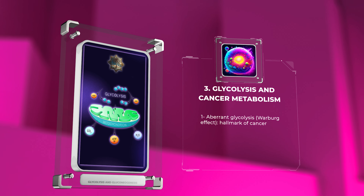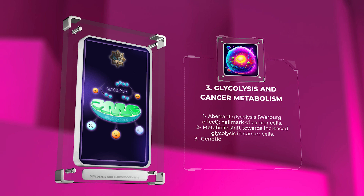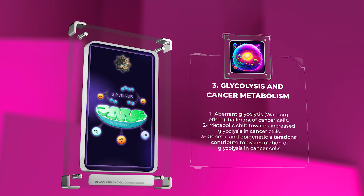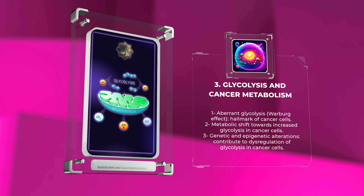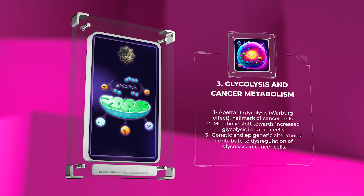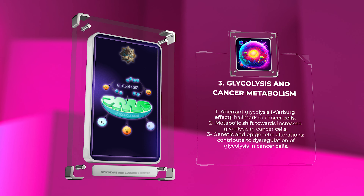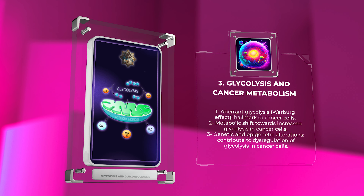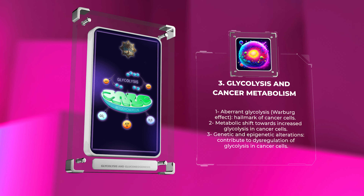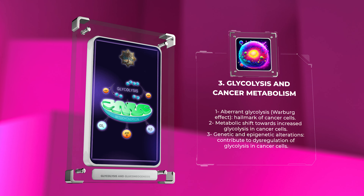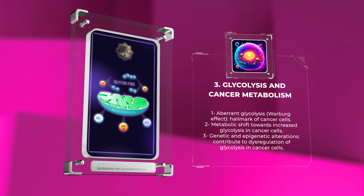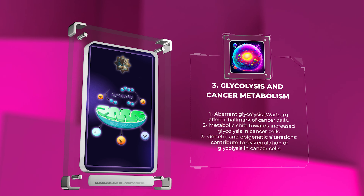Aberrant glycolysis, also known as the Warburg effect, is a hallmark of cancer cells. This metabolic shift towards increased glycolysis allows cancer cells to meet their high-energy demands and maintain rapid proliferation. Multiple genetic and epigenetic alterations contribute to the dysregulation of glycolysis in cancer cells, representing potential therapeutic targets.